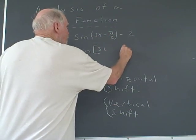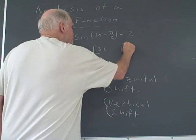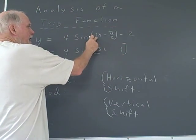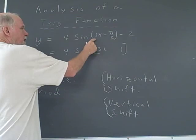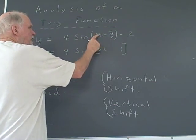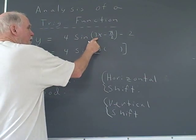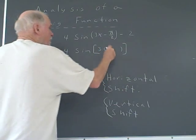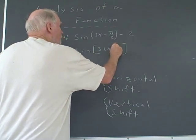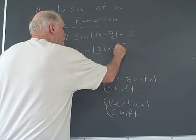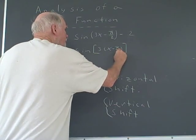And when I factor 3 out, well, I can easily factor here, and I'll be left with x. But what I really do when I factor a number out of binomials, I divide this by the number 3, and I divide this by the number 3. And if I do that, I get x minus pi over 6. I hope that's pretty clear.